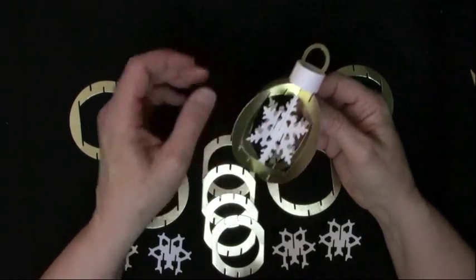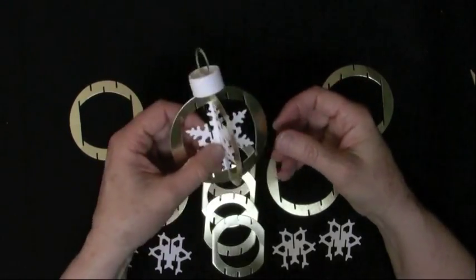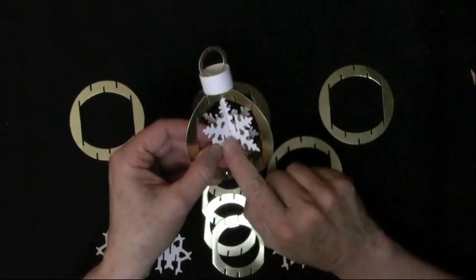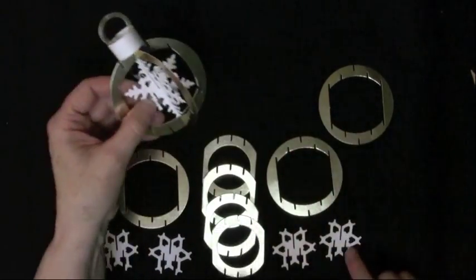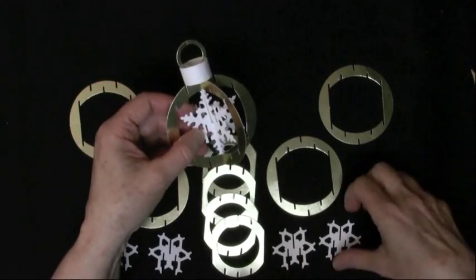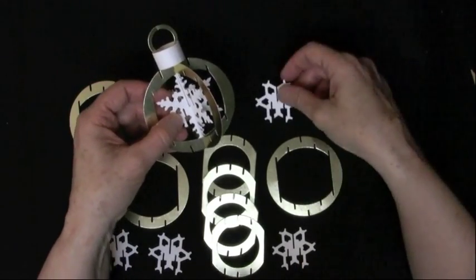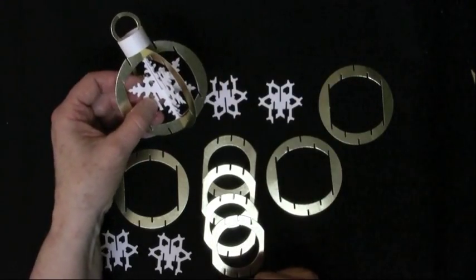The next part is to make the snowflake that's inside the ornament. So I like to start with a bottom slot. Now these four pieces are all the same. Sometimes they're going to go in one direction and sometimes they're going to go in the other direction.